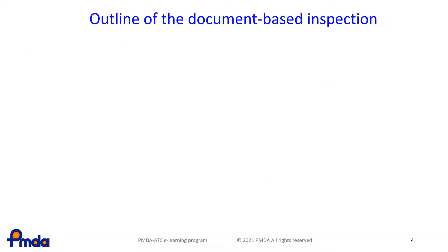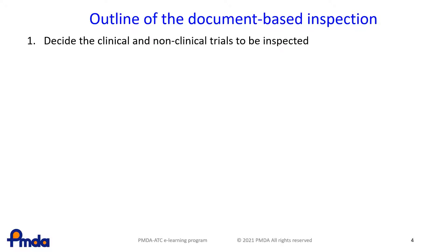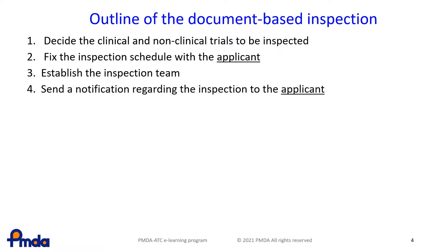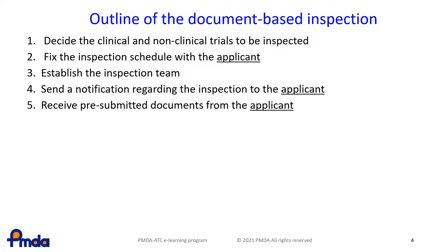This is the outline of a document-based inspection by PMDA. First, the PMDA GCP inspector extracts the clinical and non-clinical trials to be inspected in consultation with the review division in charge of the product review in PMDA. Second, the schedule for the inspection is established in consultation with the applicant. Third, the inspection team is formed. Fourth, the applicant is notified of the inspection. Fifth, the applicant is requested to submit the document to be inspected, which is received by PMDA.